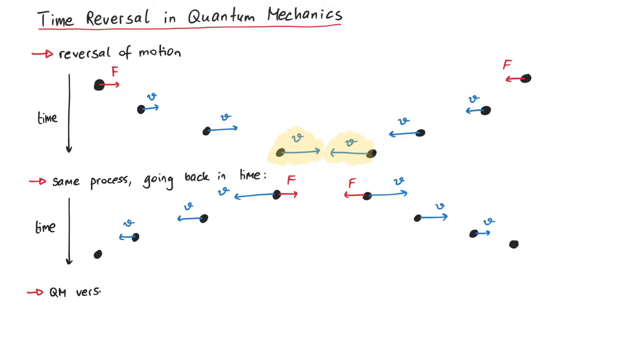The quantum mechanical version of this concept of reversal of motion can be shown by using the time evolution operator U. Consider the operator U of T2 and T1, which takes a wave function at time T1 to the time T2. The action of the time reversal operator performs a complex conjugation, which means that this expression is equal to U of T1 T2. This operator takes a wave function at time T2 to the time T1, which describes the opposite motion as before.